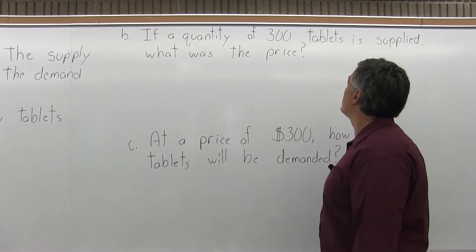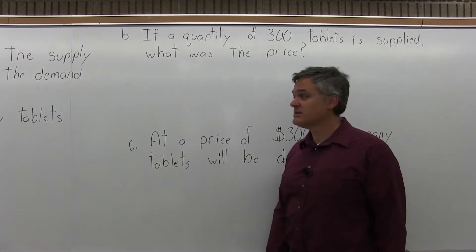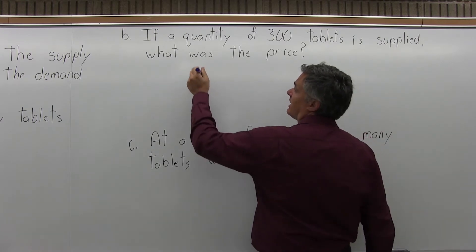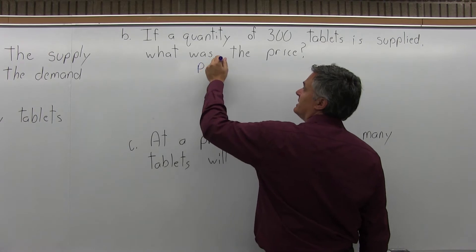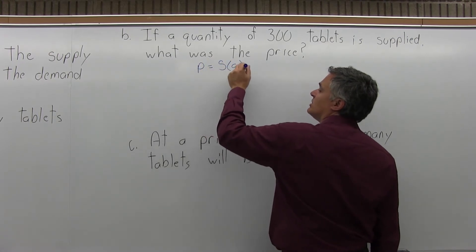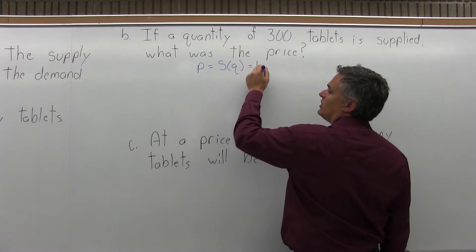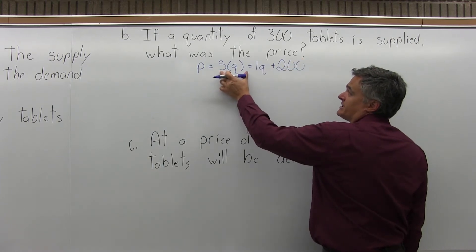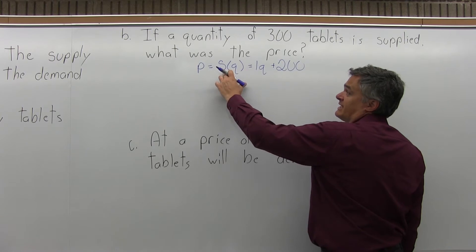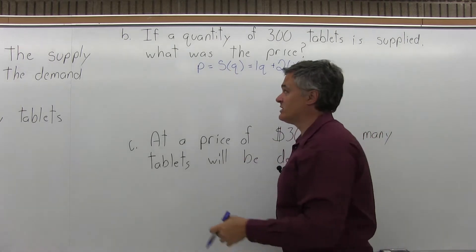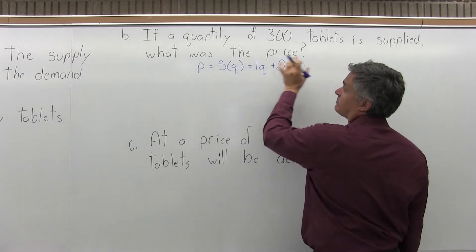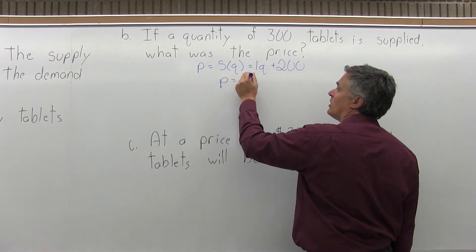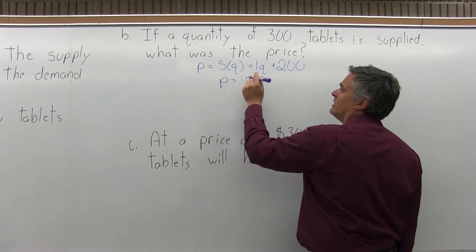Part B says: if a quantity of 300 tablets is supplied, what is the price? Again, we start with the supply equation because the question asks specifically about what's supplied. The supply equation is P equals S(Q) equals 1Q plus 200. Now that I know I've picked the right equation, I'll write it in its simpler form: P equals Q plus 200.